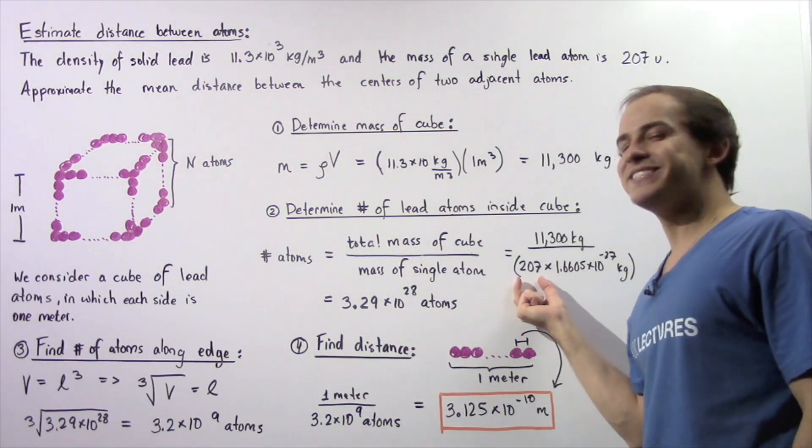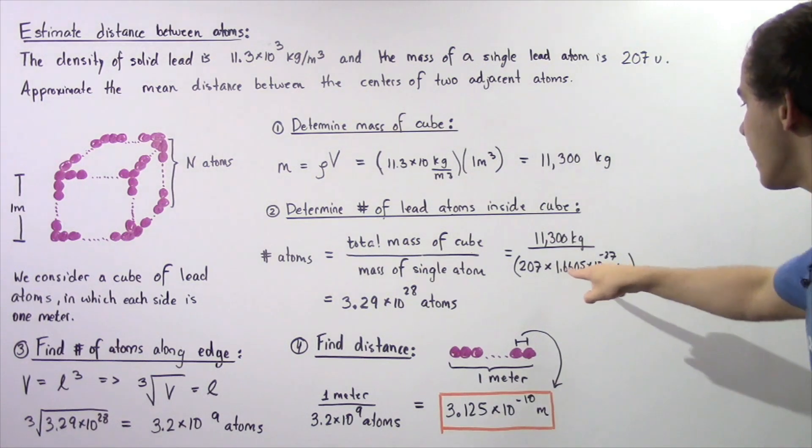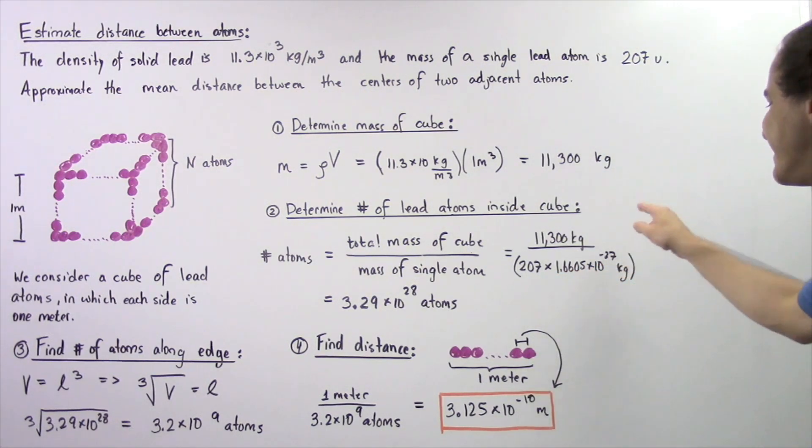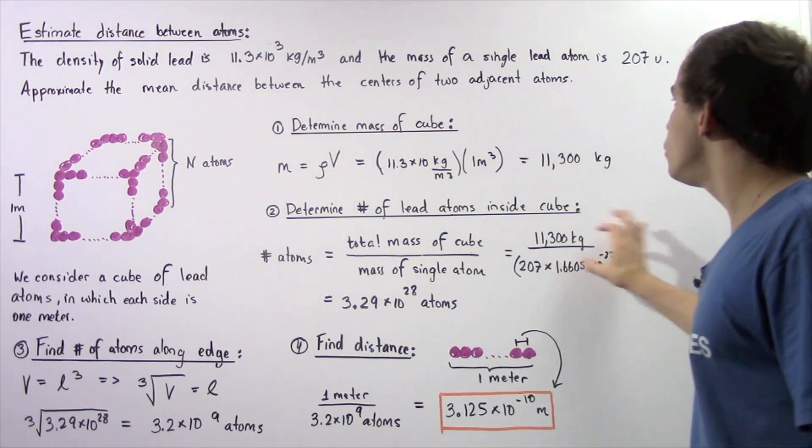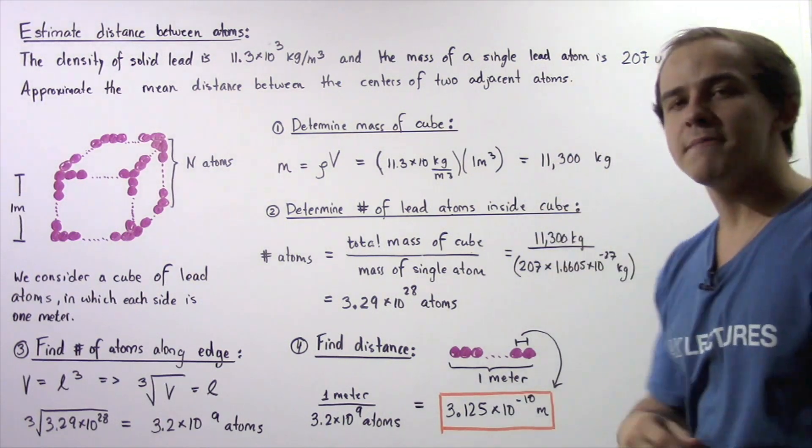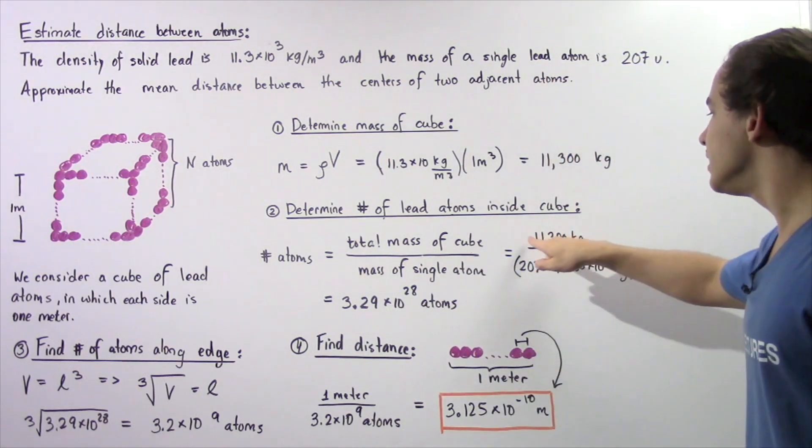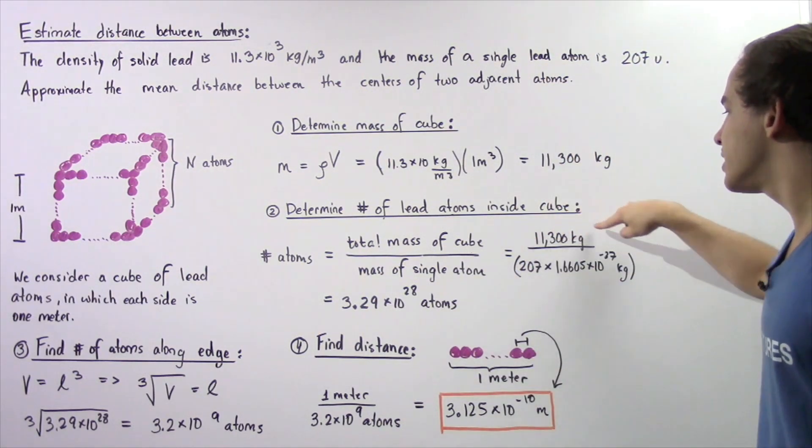So we take 207 and multiply by 1.6605 times 10 to the negative 27 kilograms to convert from unified atomic mass units into kilograms.